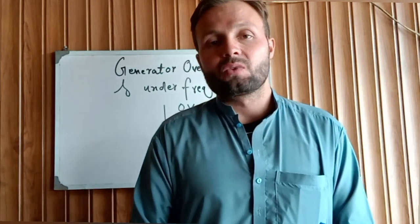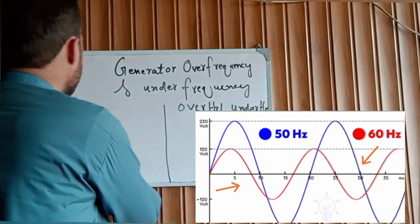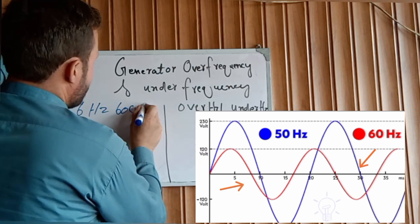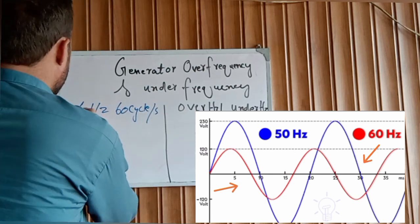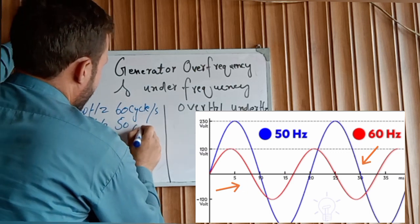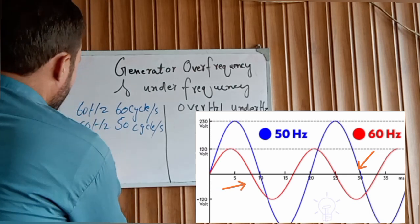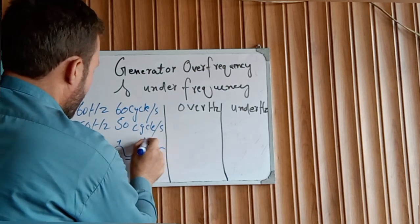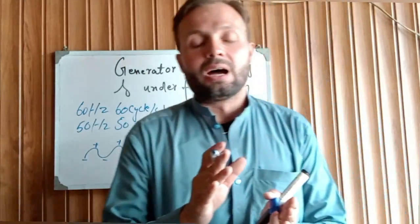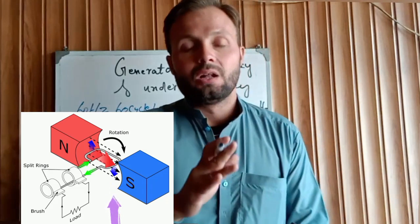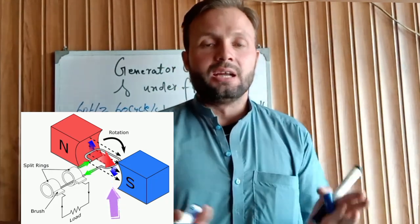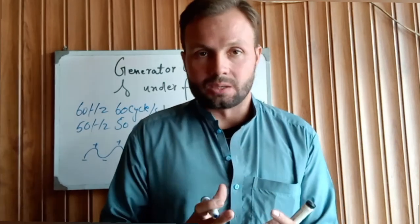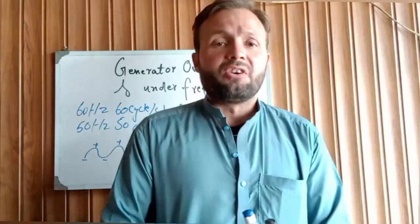So 60 Hz means 60 cycles per second, and 50 Hz means 50 cycles per second — negative to positive, positive to negative. This is the basics of frequency. When the rotor is rotating inside the armature, it cuts the magnetic poles inside the alternator armature, which produces the frequency — 60 Hz or 50 Hz.